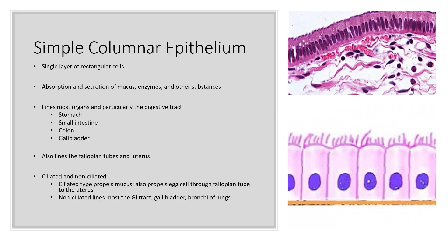Simple columnar epithelium is just a single layer of rectangular cells that function in absorption and secretion of mucus, enzymes, and other substances. Simple columnar epithelium lines most of the organs, and particularly the digestive tract. You can find this tissue in the stomach, the small intestine, your large intestine or colon, and also the gallbladder, which is an accessory digestive tissue. It also lines the fallopian tubes and the uterus in the female reproductive system.